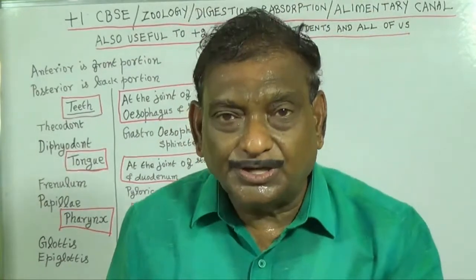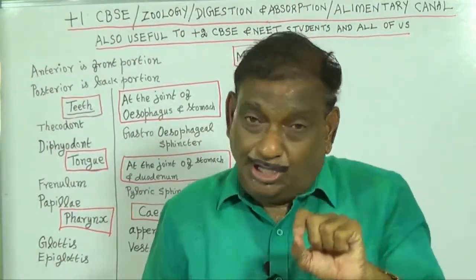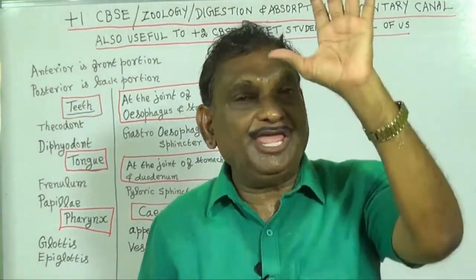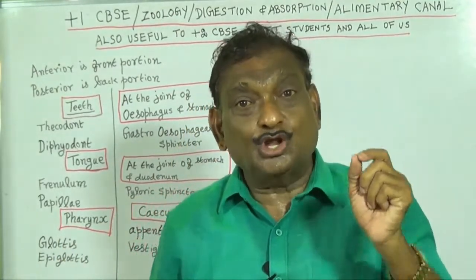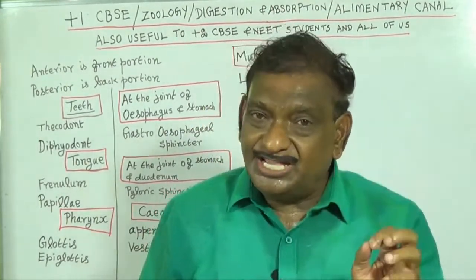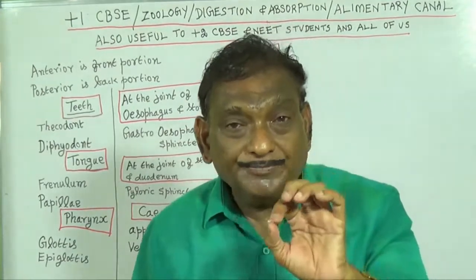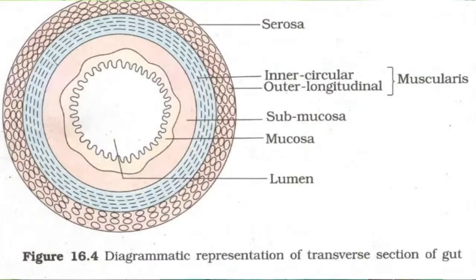The rectum opens out through the anus. Next, we are going to study the walls of the alimentary canal. In the walls of the alimentary canal there are four layers: 1. serosa, 2. muscularis, 3. submucosa, 4. mucosa. The serosa is the outermost layer.